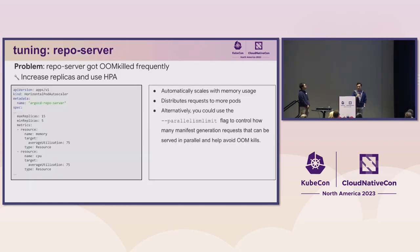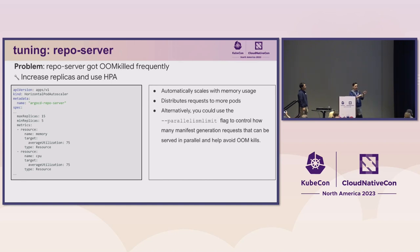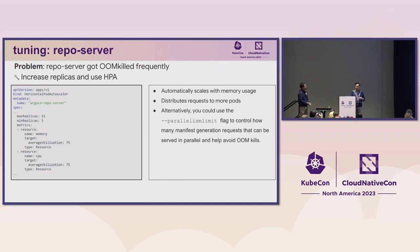Moving to the repo server — OOM kills happened very frequently. As a solution, we increased replicas and used HPA so that the repo server pods automatically scale with memory usage. This distributes requests into more pods, so each pod receives fewer manifest generation requests, translating into less memory usage. Alternatively, we can use the parallelism limit flag to control how many manifest generation requests are served in parallel, though this reduces manifest generation throughput.